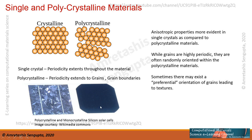Even with the bare eye it is possible to identify single and polycrystalline materials. For example, a monocrystalline silicon solar cell and a polycrystalline silicon solar cell. The polycrystalline one shows a very nice pattern and structure, because on the surface different crystallographic planes are exposed and they are reflecting light differently, giving this kind of texture.